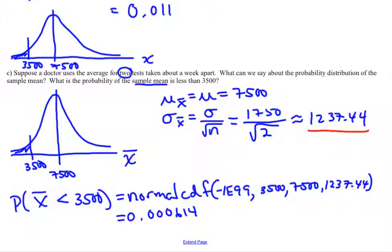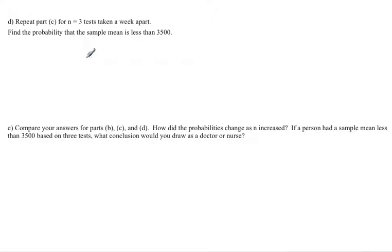Let's keep going though. Maybe the doctor is really conservative. That's a pretty small probability, but maybe you have a doctor who's really conservative and they decide to do three tests a week apart. We want to find again the probability that the sample mean is less than 3500. Let's rewrite that in a mathematical statement.